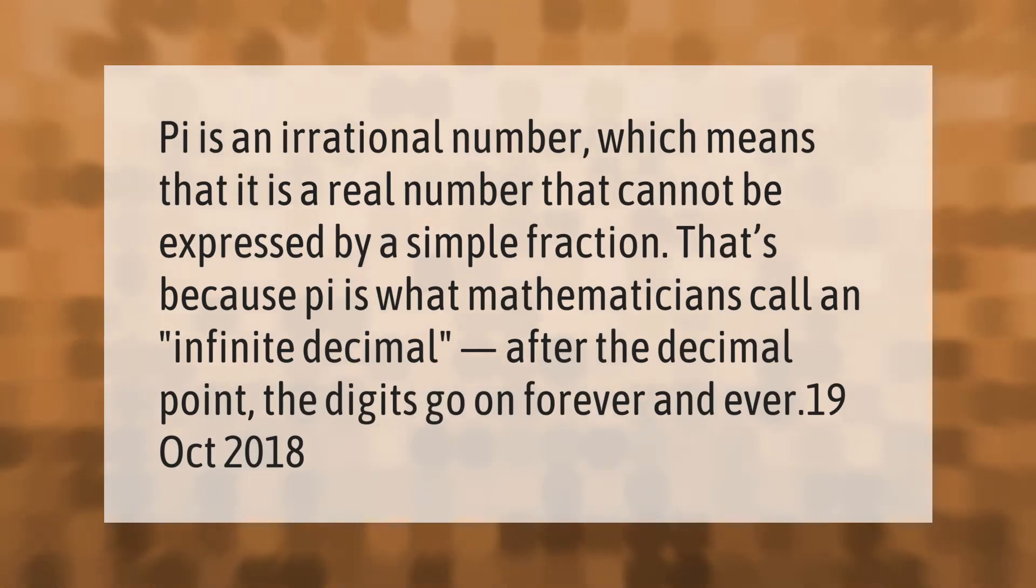Pi is an irrational number, which means that it is a real number that cannot be expressed by a simple fraction. That's because pi is what mathematicians call an infinite decimal—after the decimal point, the digits go on forever and ever.